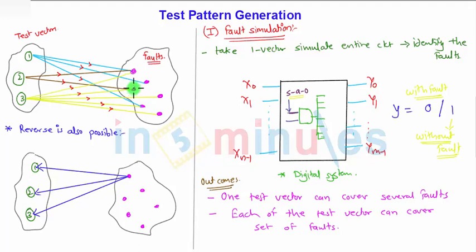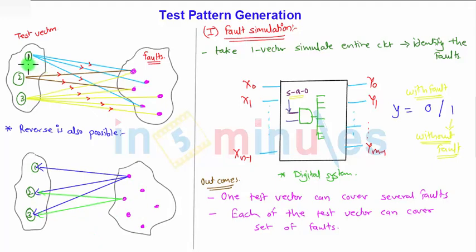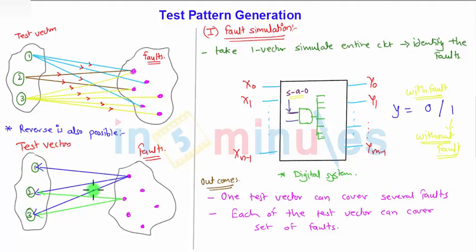This fault can only be detected by two test vectors — vector number two and vector number three — so it connects to those two. The reverse is also possible. What this means is that the test vector can detect faults, and likewise, if you concentrate on fault models or faults, you can easily identify the test vectors associated with that fault. Vice versa, the system can work.